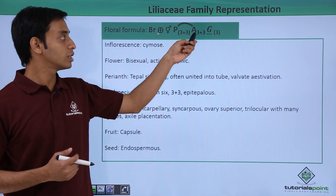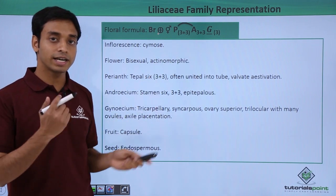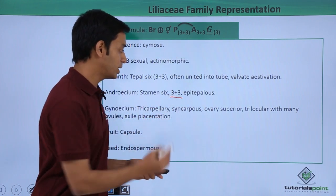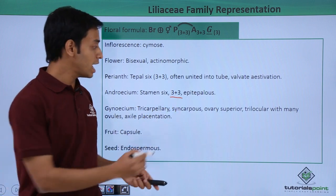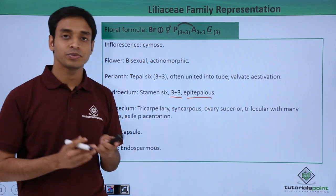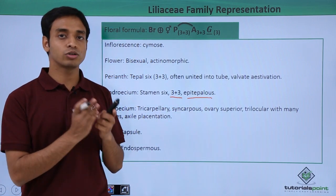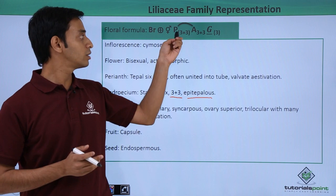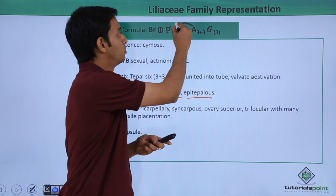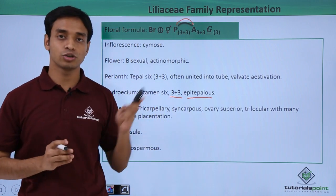If we talk about the androecium — that is the male part — they have six stamens, again in a 3+3 arrangement, which are epitepalous. This means the androecium is fused or associated with the perianth, hence the addition symbol is shown here.